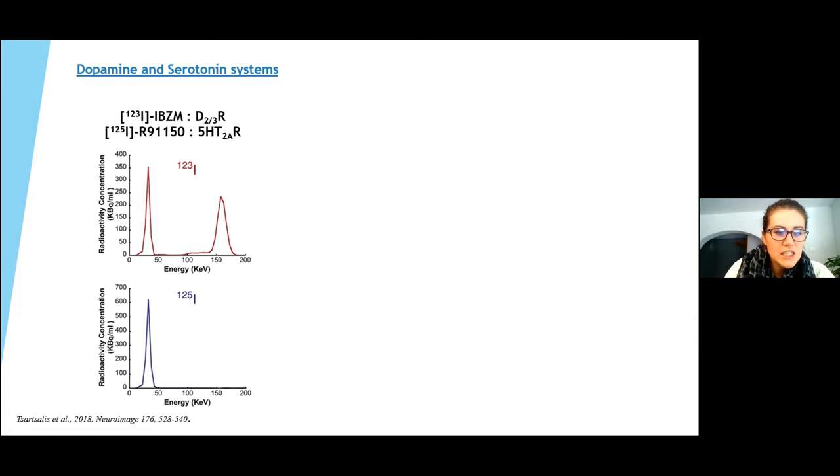The dopaminergic system influences the expression of many functions such as locomotor activity and drug addiction. The presence of interaction with other neurotransmitter systems is, of course, evident. But it appears fundamental to be able to measure not only the activity of the dopaminergic system but also that of other neurotransmitters. In order to obtain data concerning the D2/3R and the serotonin 2A receptors in a single SPECT acquisition, we labeled the ligands with either iodine-123 or iodine-125.